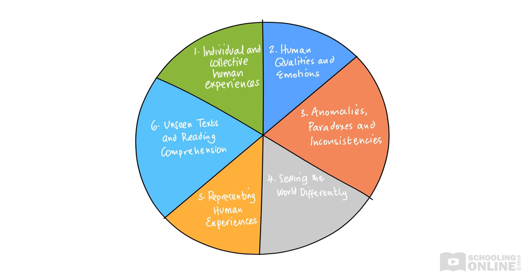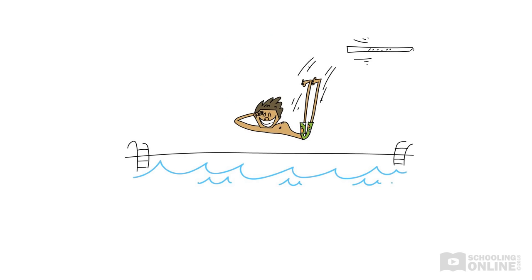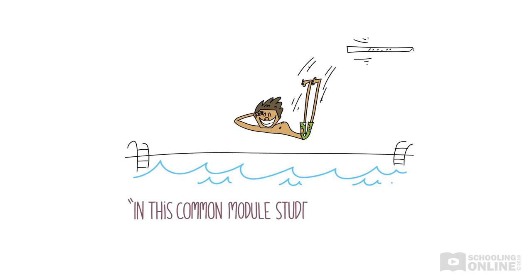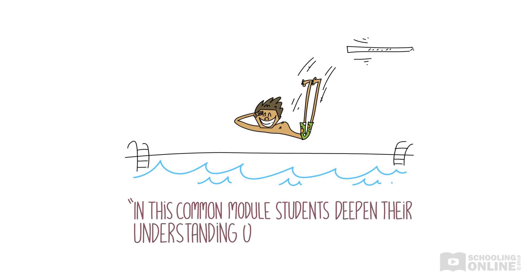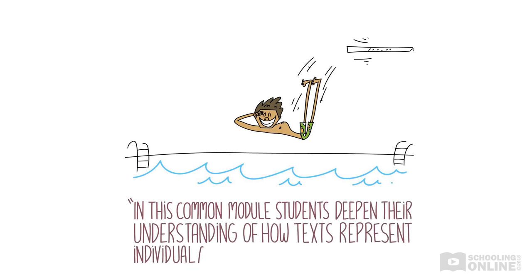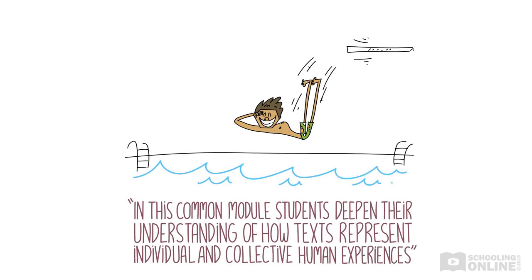This video is part one of our six-part Texts and Human Experiences series, introducing the module. Let's jump in. The first sentence of the rubric states: in this common module, students deepen their understanding of how texts represent individual and collective human experiences.